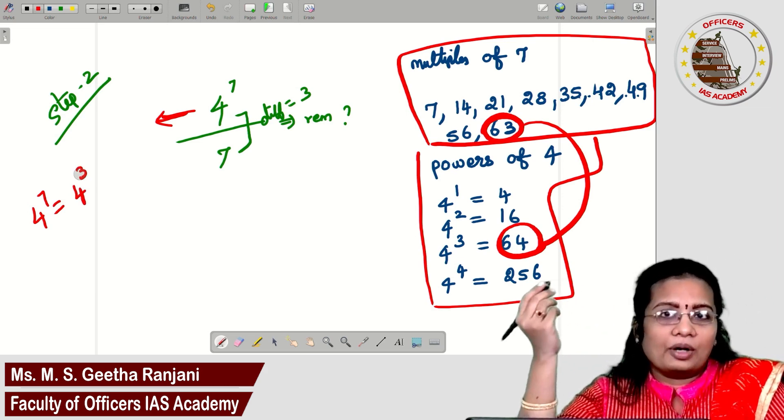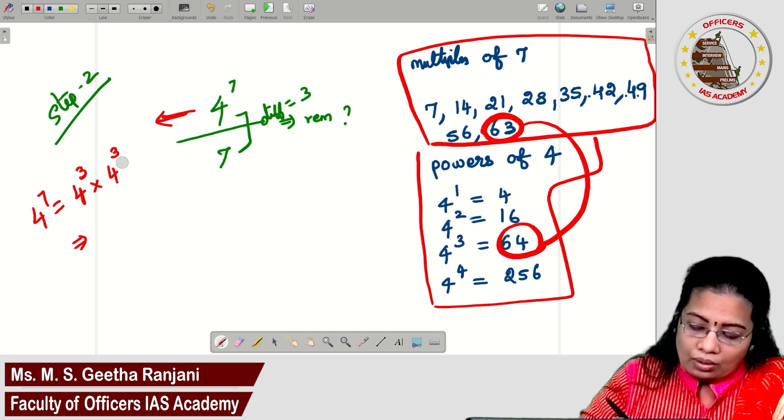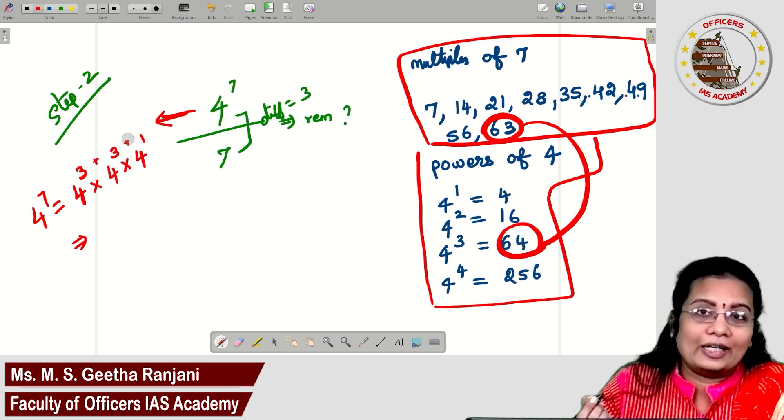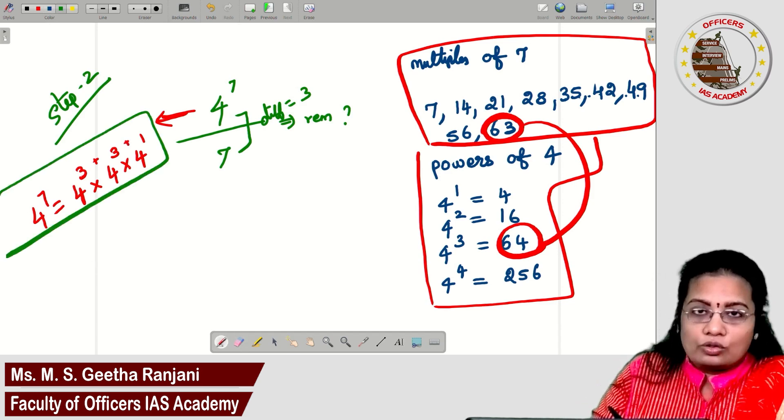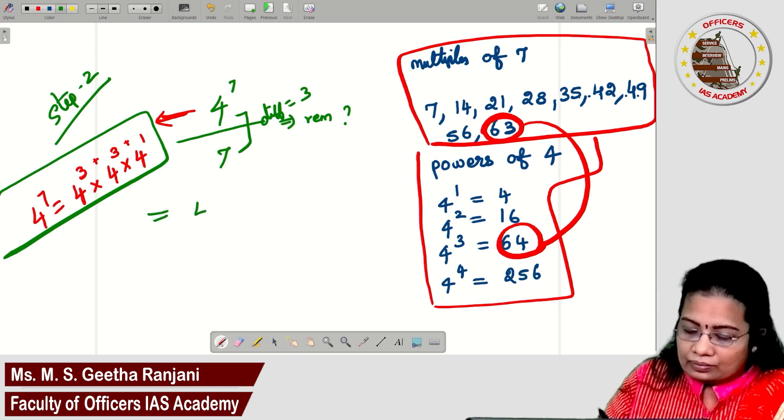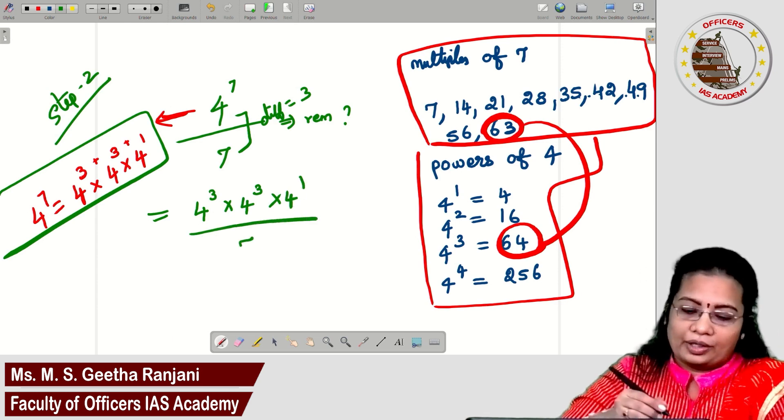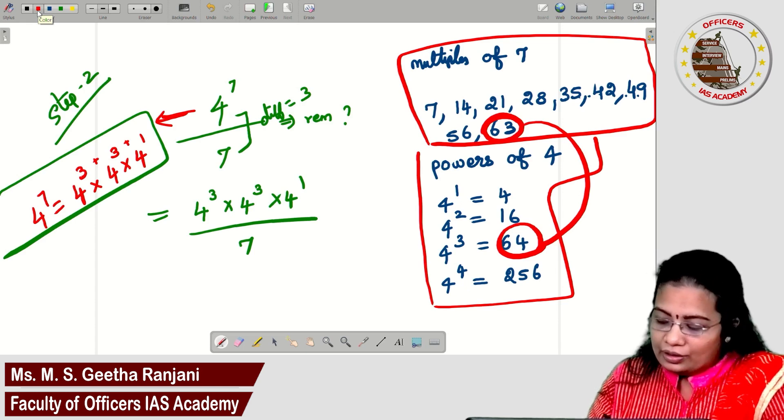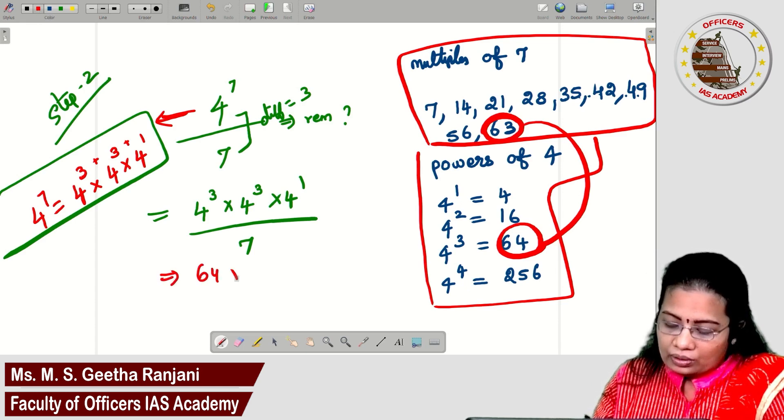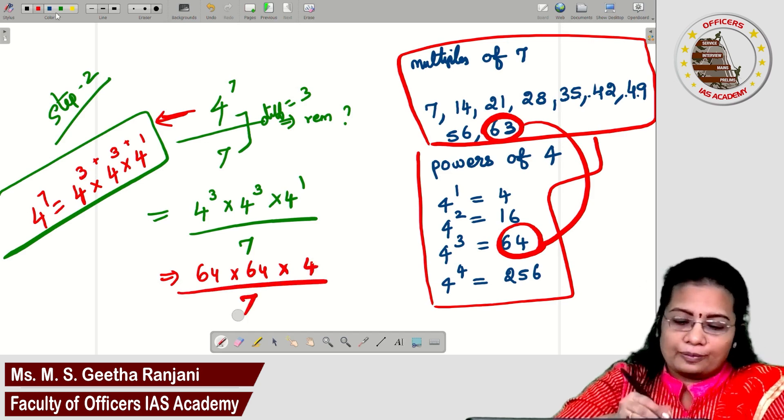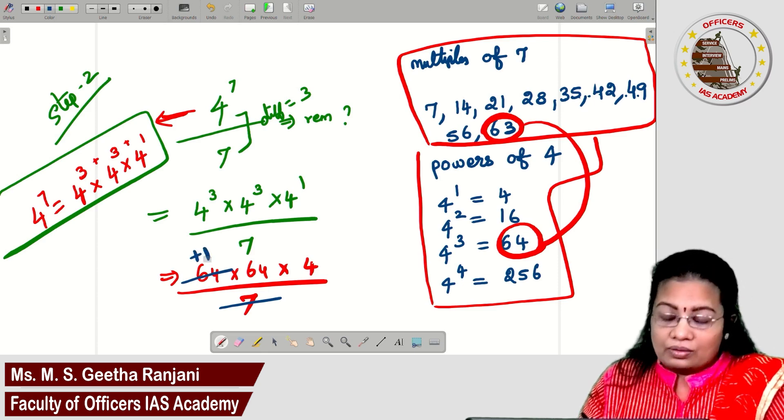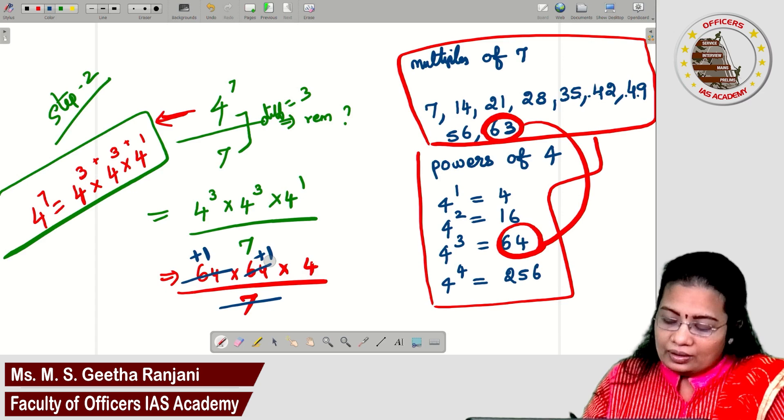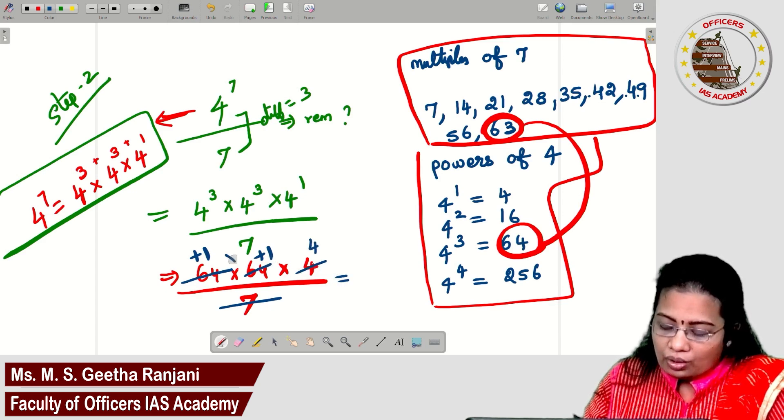I want to write 4 power 7 in terms of 4 power 3, so I will be getting minus 1: 4 power 3 times 4 power 3 times 4 power 1. If you add all the powers, you will be getting power 7. What is 4 power 3? It is 64 times 64 times 4 power 1, which is 4, divided by 7. What is the remainder? While 7 divided by 64, the value we get is plus 1. So here also plus 1. Here you can take as is 4. So 1 times 4 times 4, the remainder we got is 4.